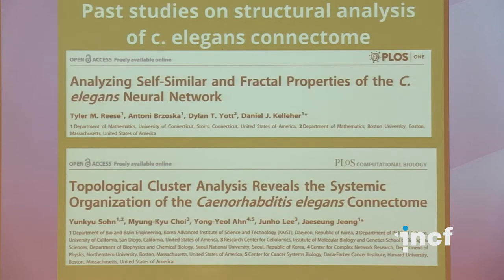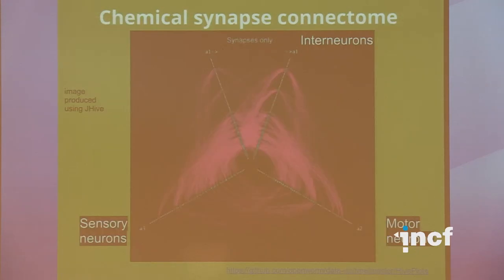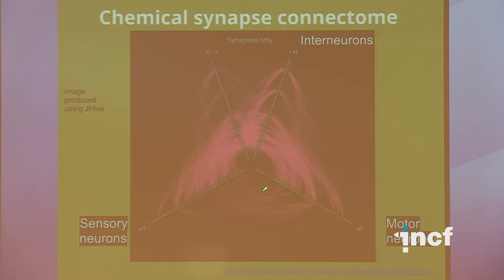There have been other explorations of the C. elegans connectome structurally — articles that looked at fractal properties and topological clustering — but none of them have ever used hive plots. To the best of our knowledge this has never been done before. Here's an example of a hive plot using the C. elegans connectome. On this axis, only sensory neurons; on these two axes — remember the split I showed you — only interneurons; and on this axis, only motor neurons. You can already start to see some interesting things. This is a rendering of just the chemical synapses, because the connectome has both chemical synapses and gap junctions.